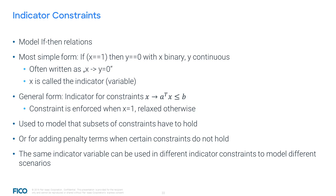Indicator constraints can be used to enforce a subset of a set of constraints. For example, suppose we want at least 5 out of 10 constraints to hold. Each of these 10 constraints can be formulated as an indicator constraint with a different indicator variable. By taking the sum of the different indicators greater than or equal to 5, we enforce that at least 5 constraints — it does not matter which ones — have to hold. Moreover, indicators can also be used for adding penalty terms when a certain constraint does not hold. In particular, the variable x can be added to the objective such that when it takes value 0, it implies an objective bound. The same indicator variable can be used in different indicator constraints to model different scenarios — one indicator variable can indicate different constraints if used with value 0 for one and value 1 for the other.